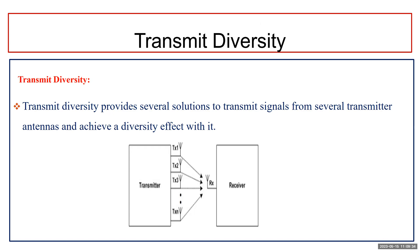So in the downlink condition only, we are going for transmit diversity. Transmit diversity refers to antenna diversity, which comprises spatial diversity, pattern diversity, and polarization diversity, which we discussed already. Transmit diversity provides several solutions to transmit signals from several transmitter antennas and achieve a diversity effect.